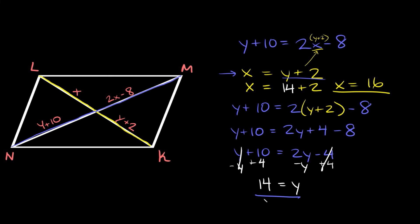Now that we know x equals 16 and y equals 14, we can find all the lengths. The length represented by x is 16, and since opposite segments are equal, the length y plus 2 is also 16. Plugging y into y plus 10: 14 plus 10 equals 24, so that distance is 24. And since the opposite segment equals that, it is also 24.